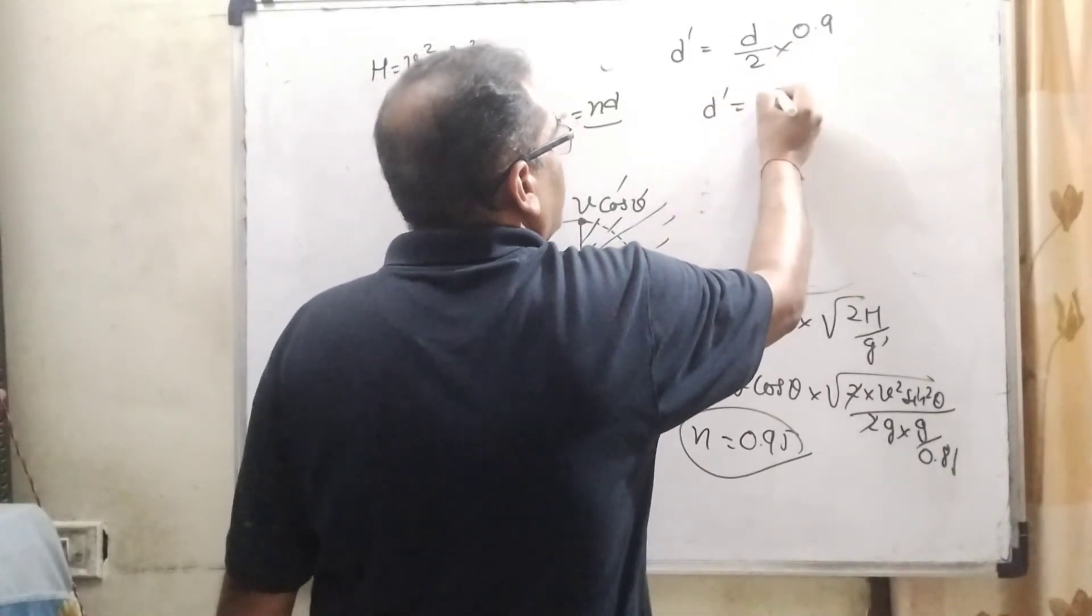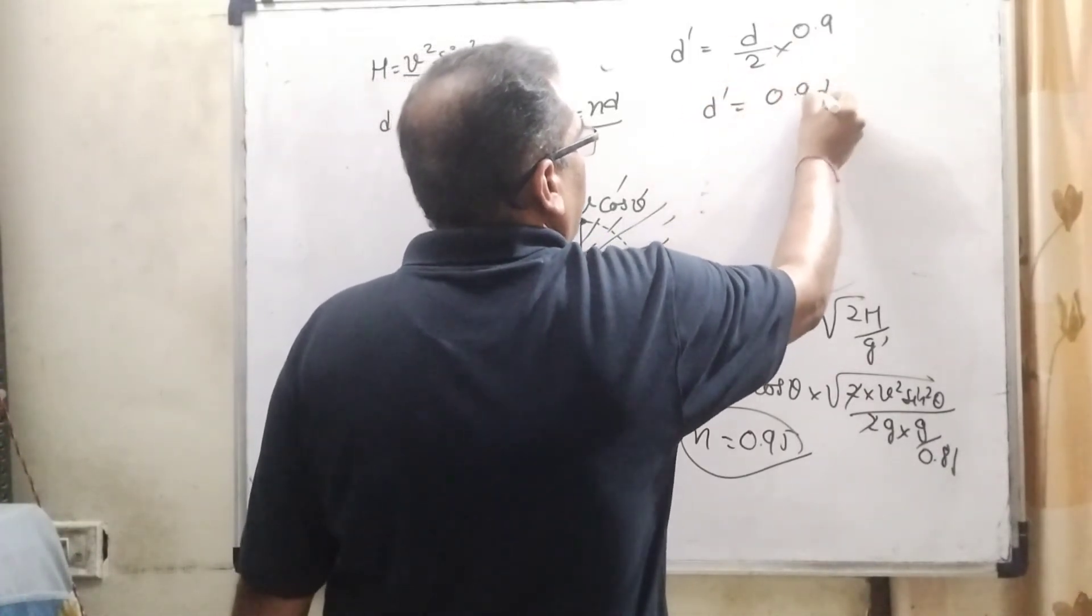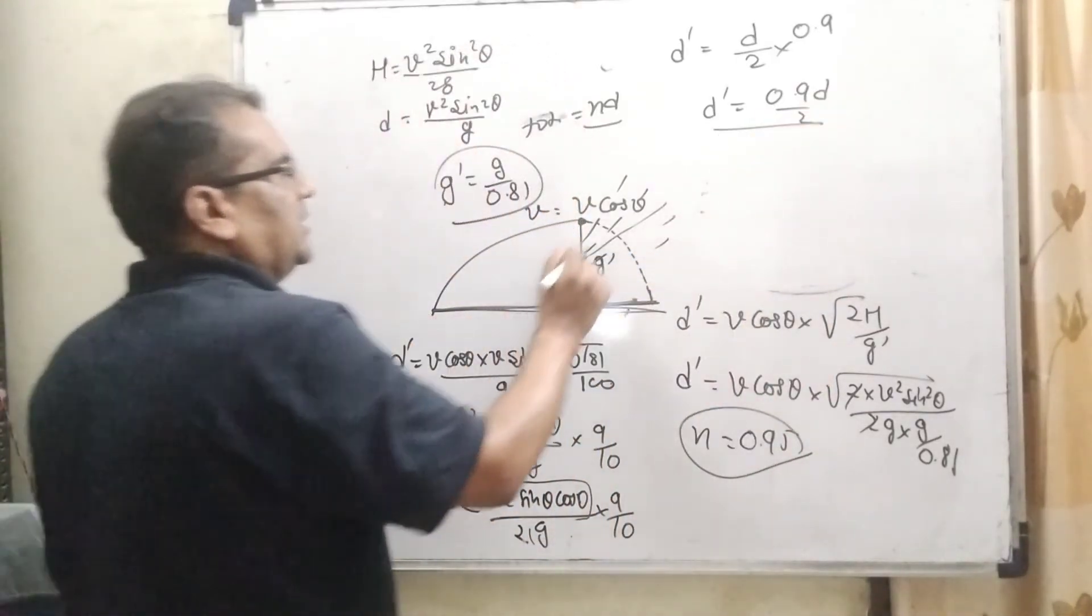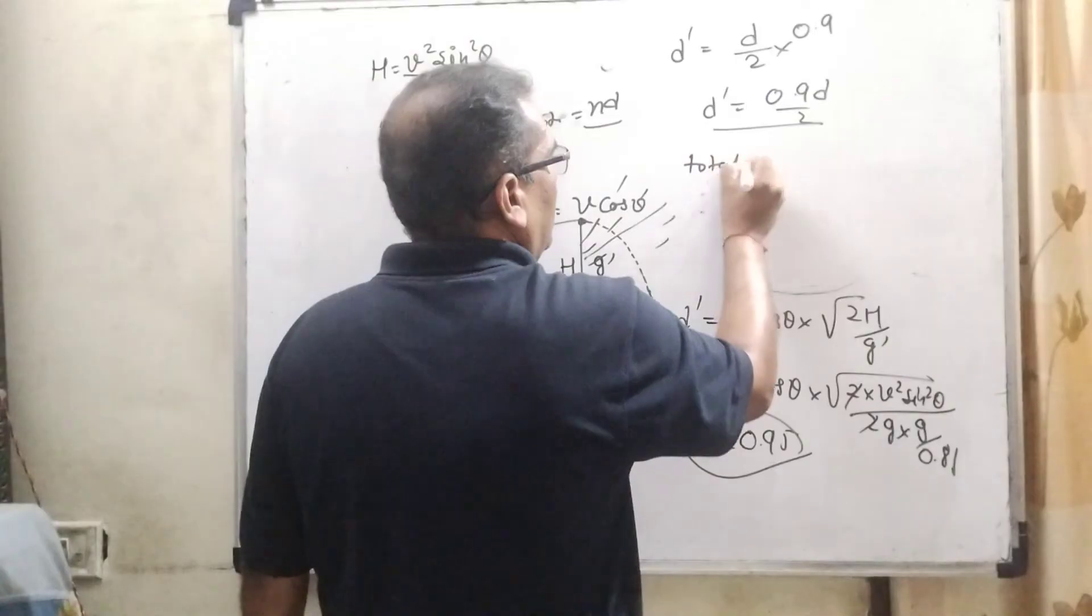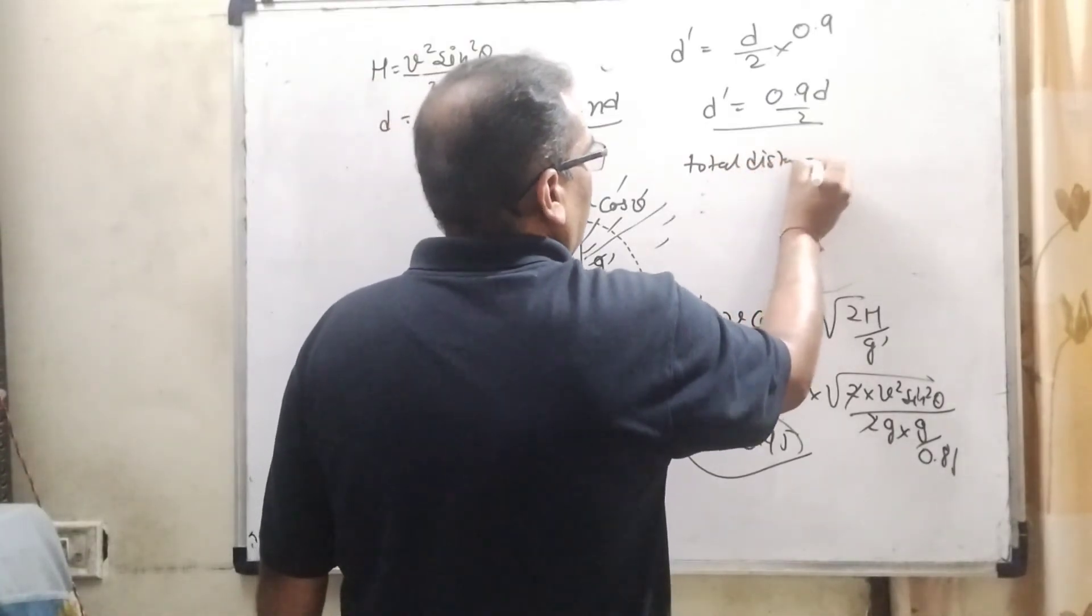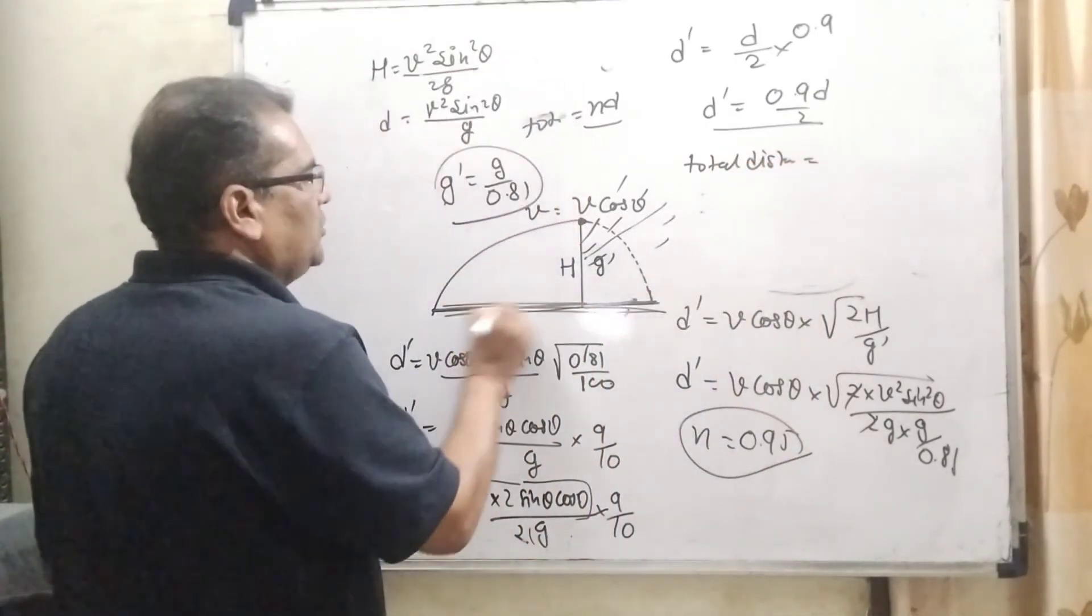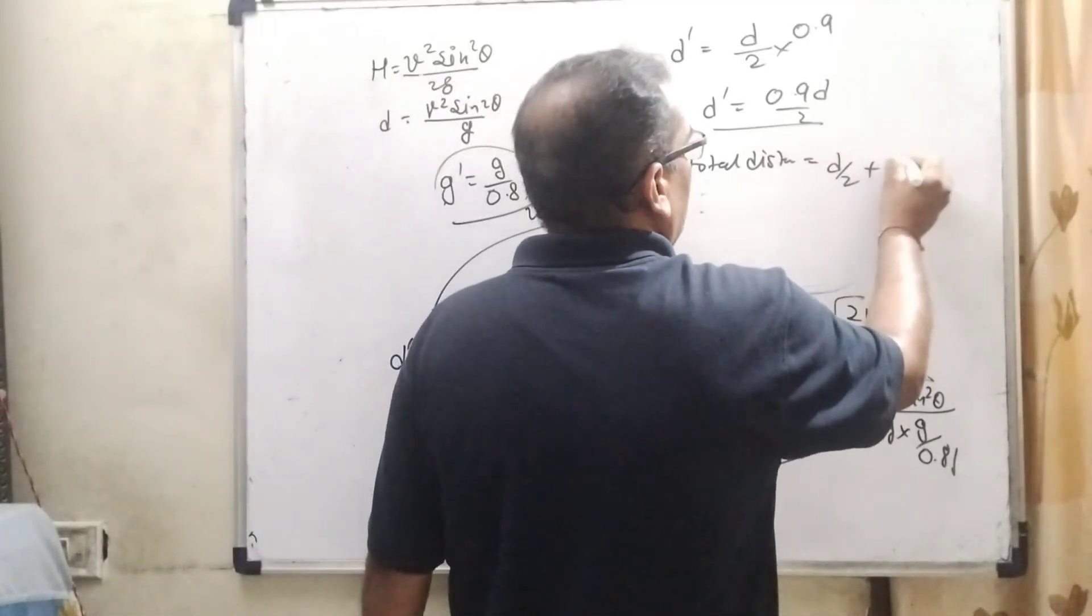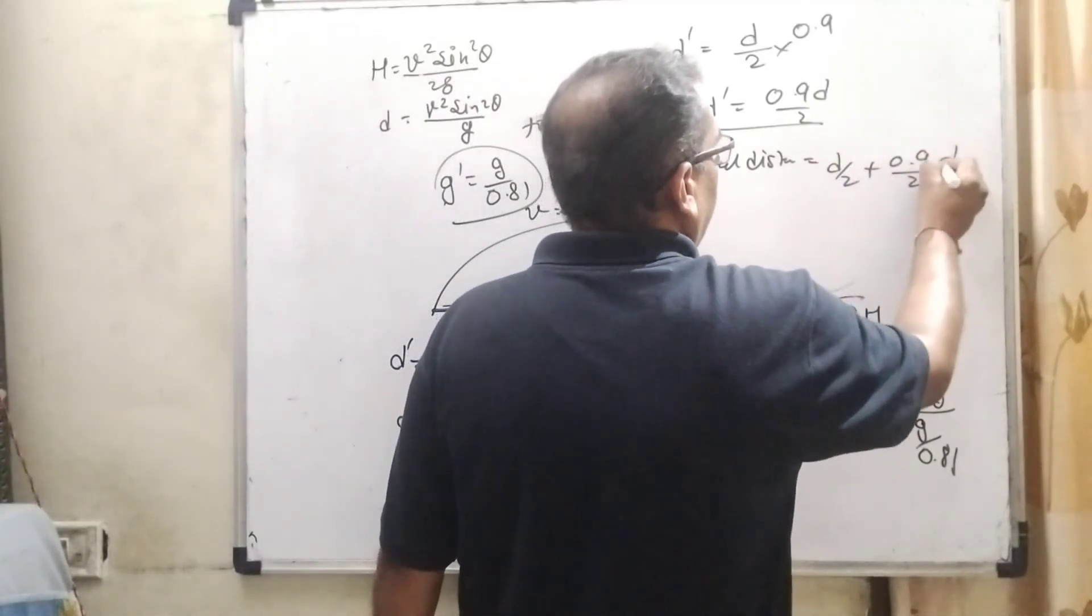So here D dash equals 0.9 D by 2. Here we have to find out total distance. Then total distance equals this portion as usual D by 2 and this distance 0.9 D by 2.